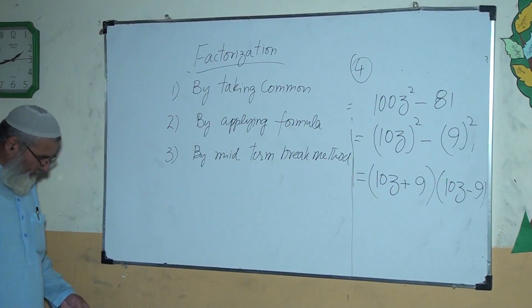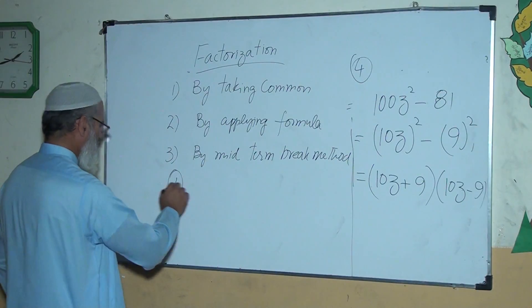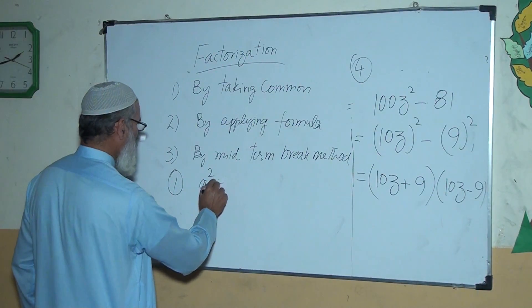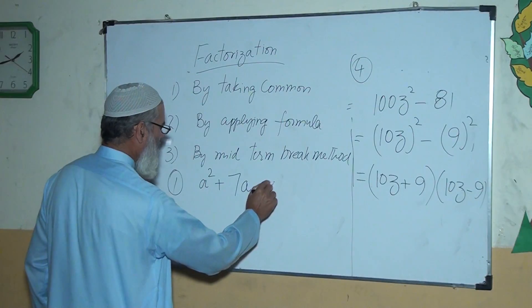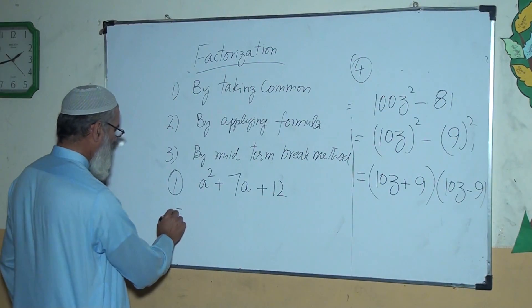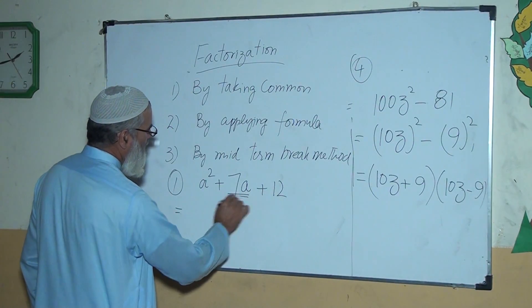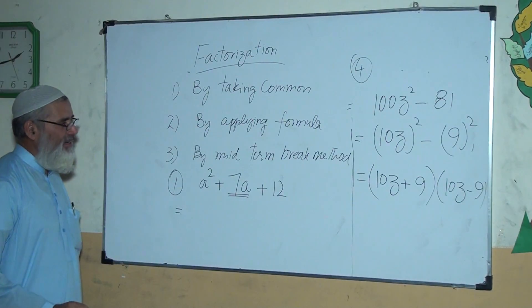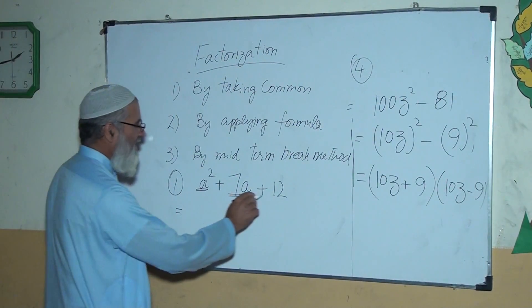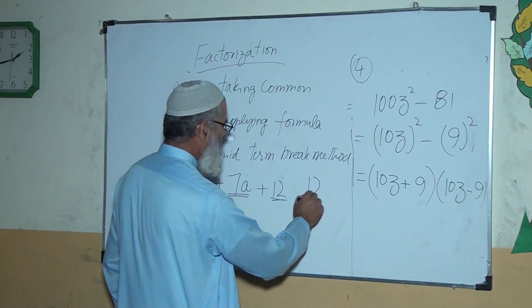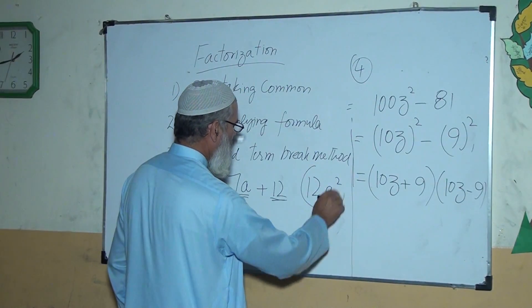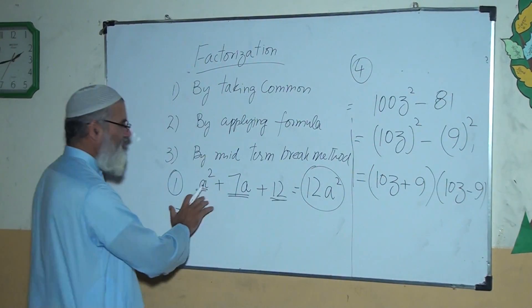The method is a² + 7a + 12. Now I have to break this term, which is 7a. I want the product of the first term and last term. It will be 12a². This is the product of the first term and the last term.